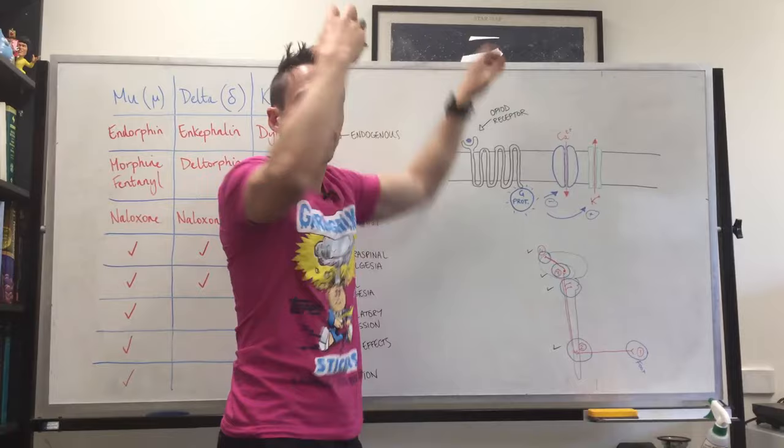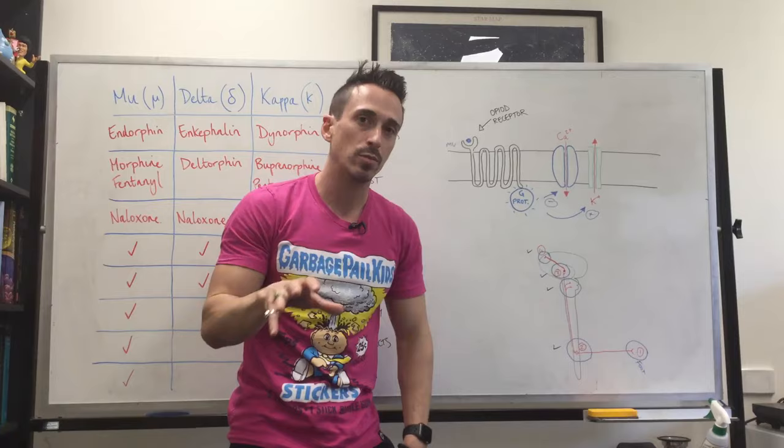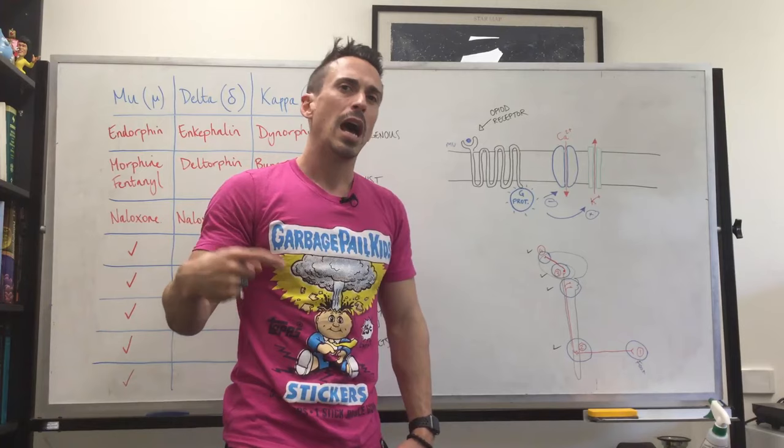However, at the cortex, where we have perception of pain, it modulates pain by altering our perception. If somebody comes in with a 10 out of 10 pain and you give them morphine and ask if they're still feeling the pain, the pain doesn't go away. They say, yeah, I still feel the pain, I just don't care. That's how it modulates the perception of pain. So, this is opioids and opiates.